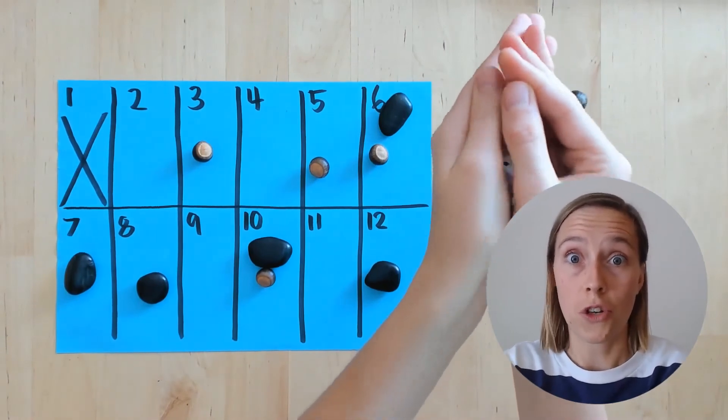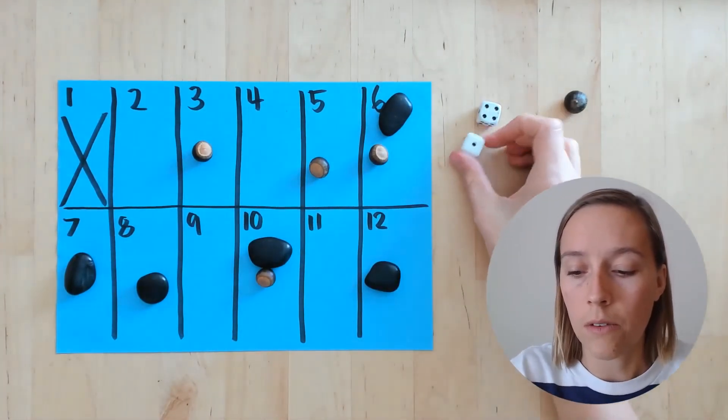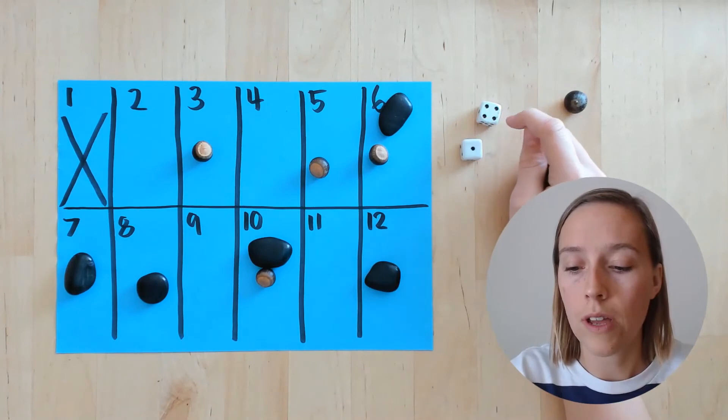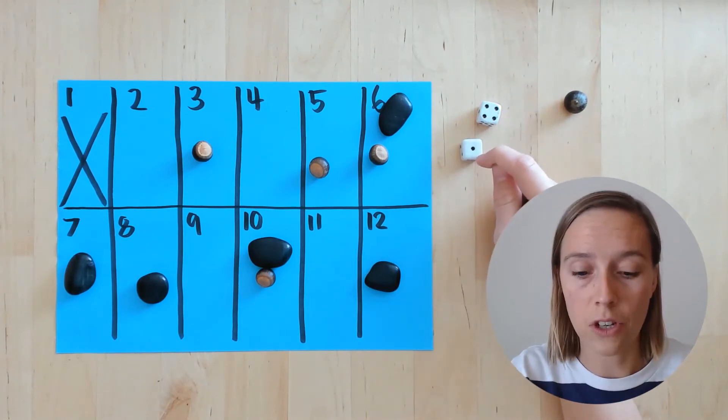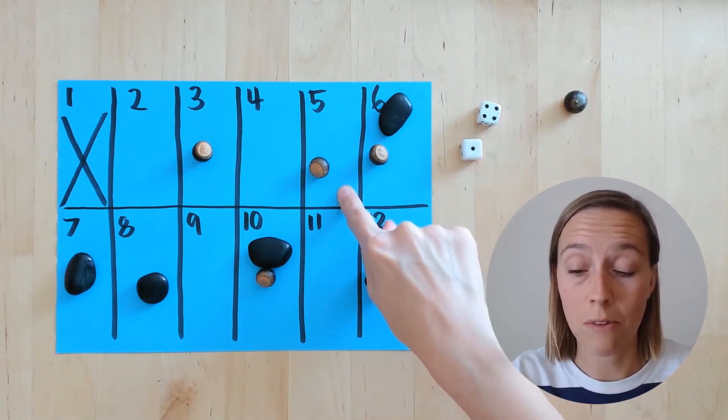Then it's the rock's turn. Give them a little shake, drop them on the ground. And we've got one, two, three, four, five dots. So there's no rocks on number five.